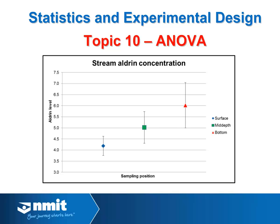Welcome to topic 10, essentially the final topic in statistics, in our exploration of inferential statistics which has come after our descriptive statistics component. ANOVA is a method we use for doing multiple t-tests at once. This is required because often we have multiple data sets — more than just two — so we're not just comparing one mean to another. We might have five data sets that we want to compare all at the same time rather than doing every possible combination of t-tests to find which ones are significantly different. What ANOVA does is tell us if there is a significant difference in any of the data sets, and if there is, we can do some further exploration to see which of the data sets are different from each other.